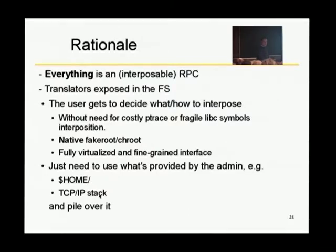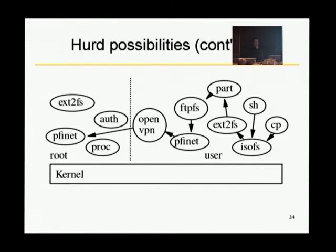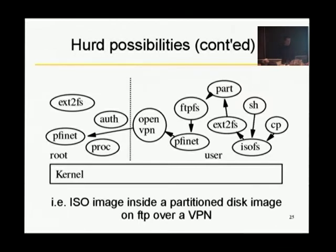So you can just use your home directory and the TCP/IP stack and pile anything over it. For instance, you can remap /bin/sh to your own bin/sh. You create another view of the file system in which /bin/sh doesn't refer to the root /bin/sh but your own. You can remap bin to a union mount of things. So you have OpenVPN, pfinet, FTPFS, proc, ext2fs, ISOFS — and then at last a shell. It's not so crazy actually, because you have an ISO image inside a disk hosted over FTP but on a remote server over VPN. You may have to do this — I think I had to do that at some point.